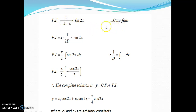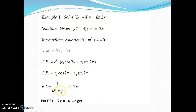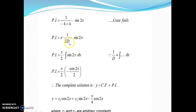Applying the case of failure: multiply numerator by x, differentiate denominator with respect to D, function remains as it is. Differentiating D² + 4 with respect to D gives 2D. So we get x/(2D)·sin(2x). Now 1/D stands for integration with respect to x. So x/2 × integration of sin(2x) = x/2 × (−cos(2x)/2). Therefore PI = −x·cos(2x)/4.